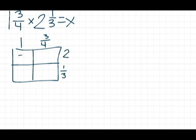One times two is two. Three-fourths times two is six-fourths. Three-fourths times one-third is three-twelfths. And one times one-third is one-third.